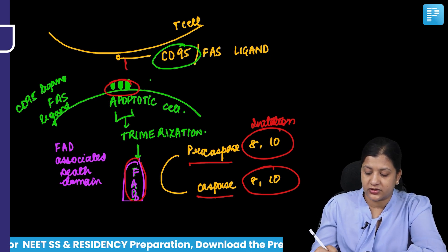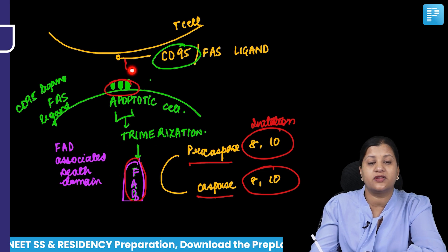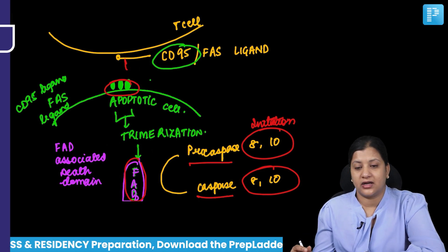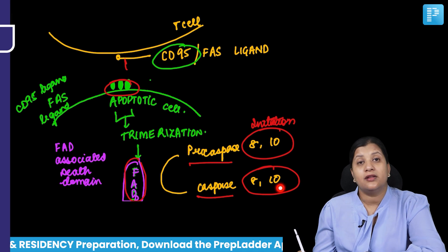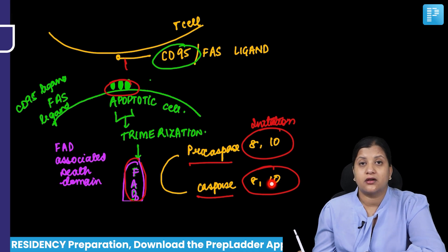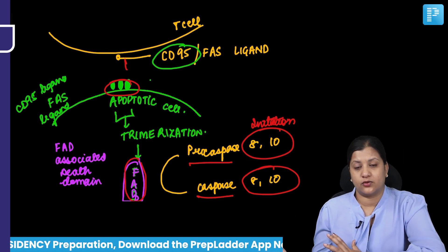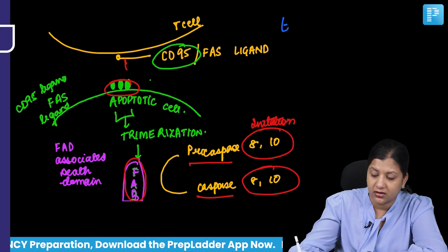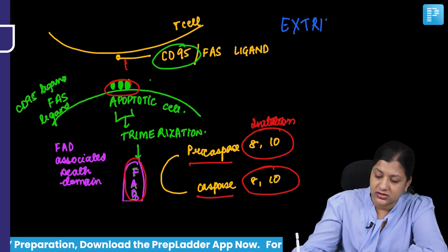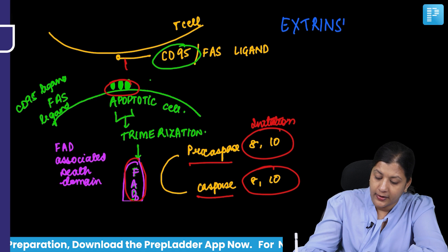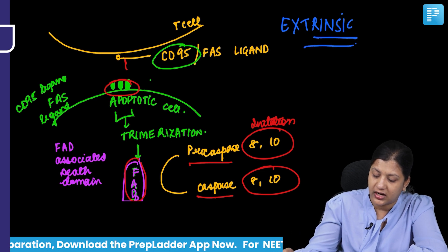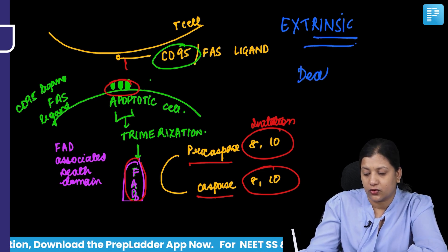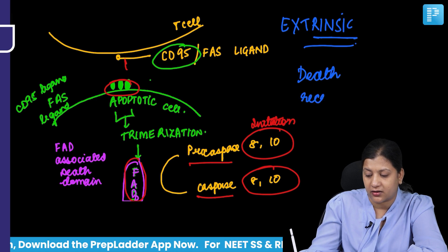FADD comes whenever there is trimerization of the CD95 receptors or the Fas receptor. The interaction happens outside of the cell — not inside. This trimerization results in initiation, and once initiation occurs, the next process is execution. This pathway is called the extrinsic pathway, and since it is associated with the outside of the cell, it is also called the death receptor pathway.